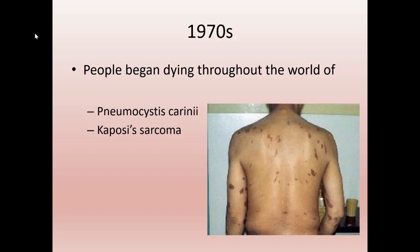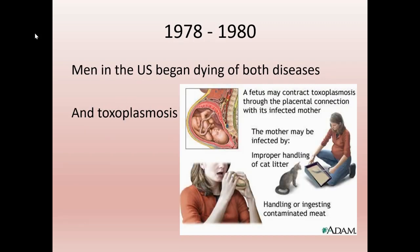Kaposi's sarcoma is a skin cancer usually only found in men of Mediterranean descent later in life, and it never gets bigger than the size of the eraser at the end of your pencil. You can see a young man with rather advanced Kaposi's sarcoma. People also began dying of toxoplasmosis — caused by an amoeba found in cat feces. If cats walk on your counters, you've probably eaten it, but your immune system can fight it off fine.